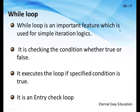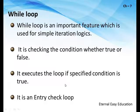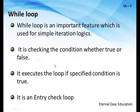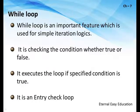While loop is an important feature which is used for simple iteration logics. It checks the condition whether true or false and executes the loop if the specified condition is true — same working principle as the for loop. There is a condition; if the condition is true the body of the while is executed, otherwise it comes out of the loop. You must know that while is an entry check loop, just like the for loop.